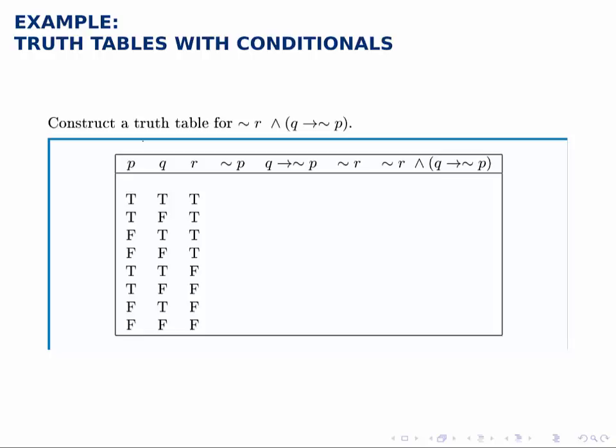For the not p column, we look at p and negate each of these, replacing each true with false and each false with true. So that looks something like this.